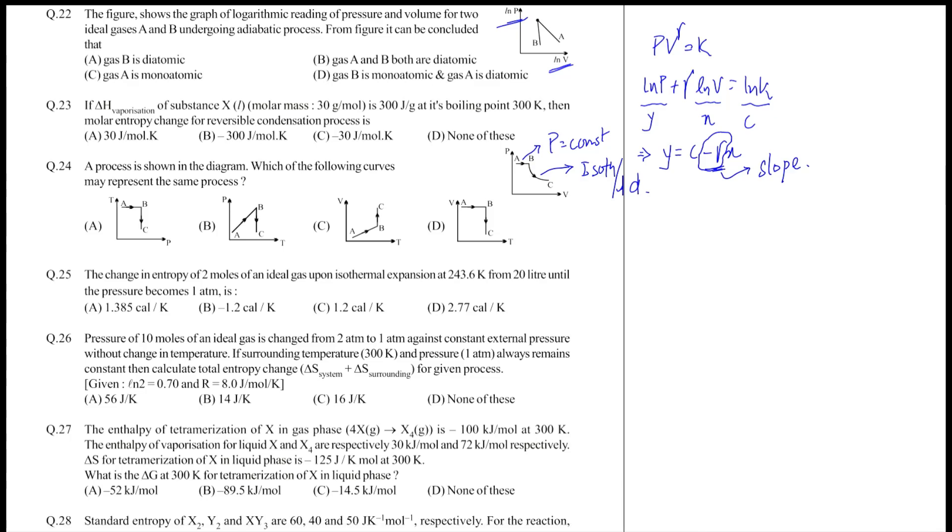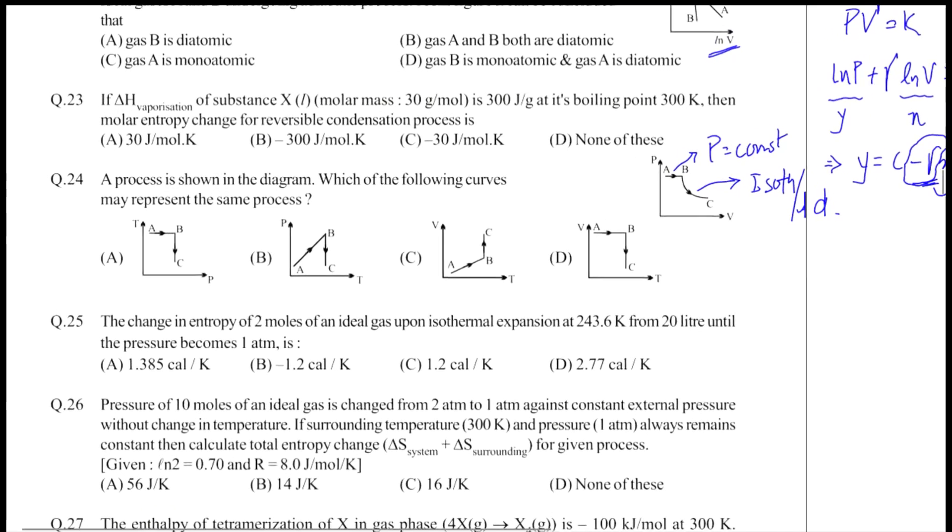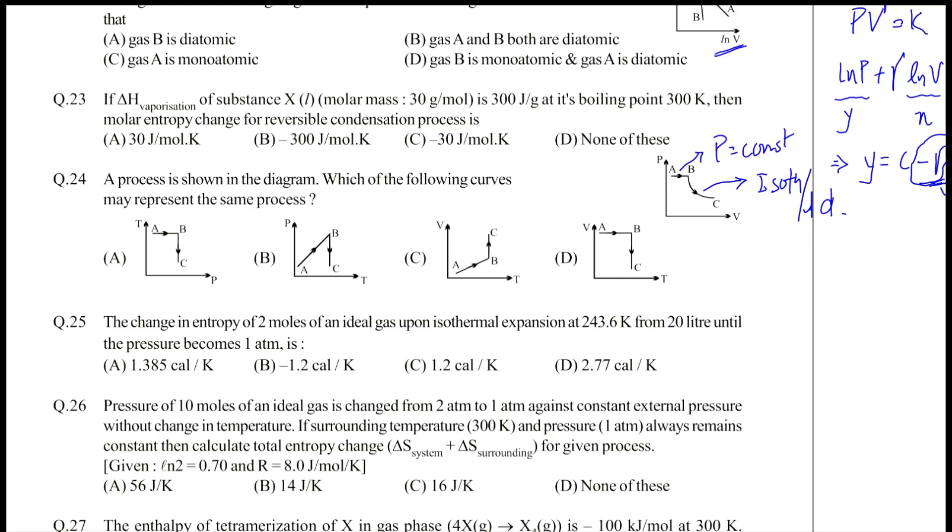Let's first eliminate processes on the basis of this. The first process AB has to be isobaric. It's not isobaric in this case or this case either. Now, V by T is a constant because V by T is a constant, the process AB is isobaric.